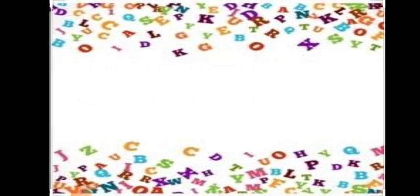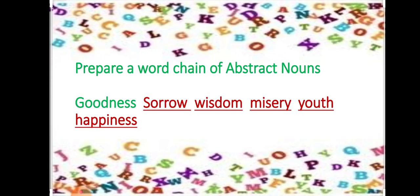Now let's move on to the next example. Let us prepare a word chain of abstract nouns. My word is 'goodness.' It has ended with 's' so my next word will be 'sorrow', then 'wisdom', 'misery', 'youth', and 'happiness.'